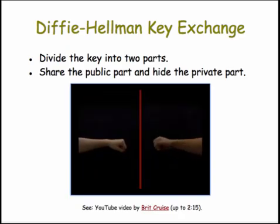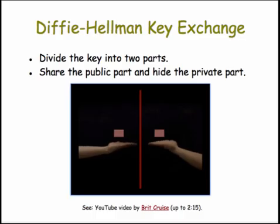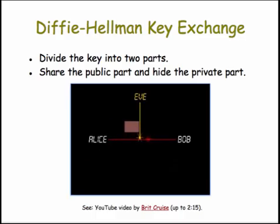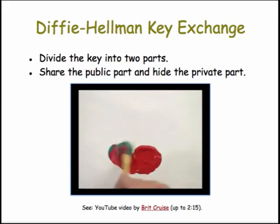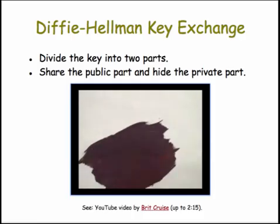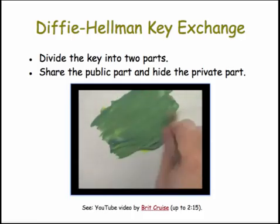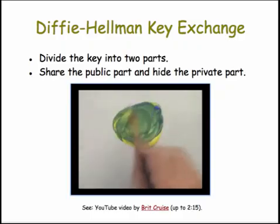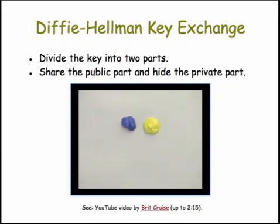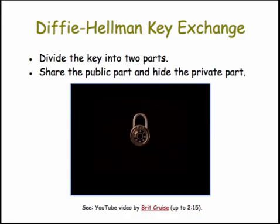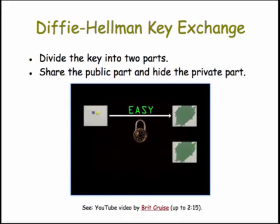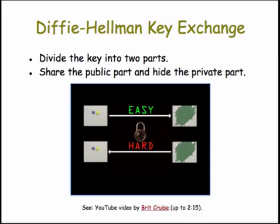So how could Alice and Bob agree on a secret color without Eve finding it out? The trick is based on two facts. One, it's easy to mix two colors together to make a third color. And two, given a mixed color it's hard to reverse it in order to find the exact original colors. This is the basis for a lock — easy in one direction, hard in the reverse direction. This is known as a one-way function.